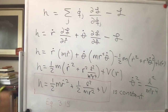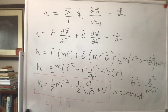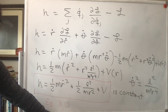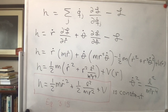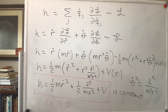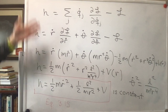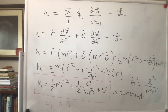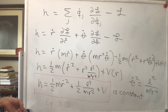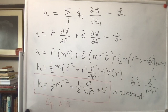This gave us another constant of integration. In general we're going to have two second-order differential equations, so we will need four integrations. The angular momentum conservation and the energy conservation have performed two integrations, and so we have another two to do.